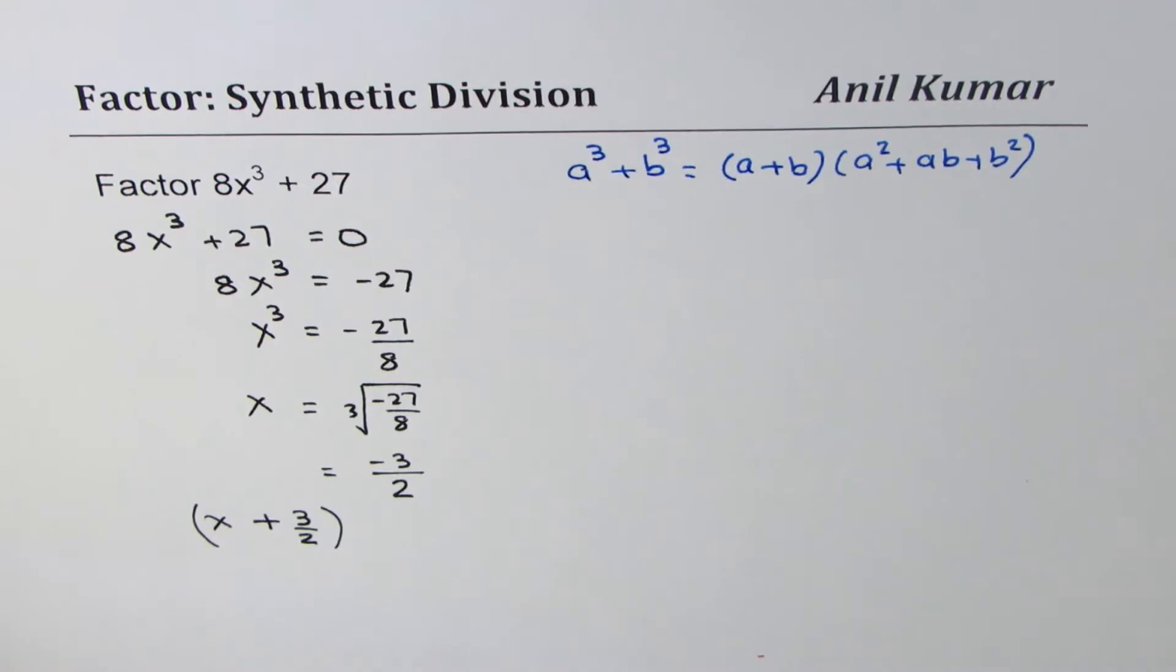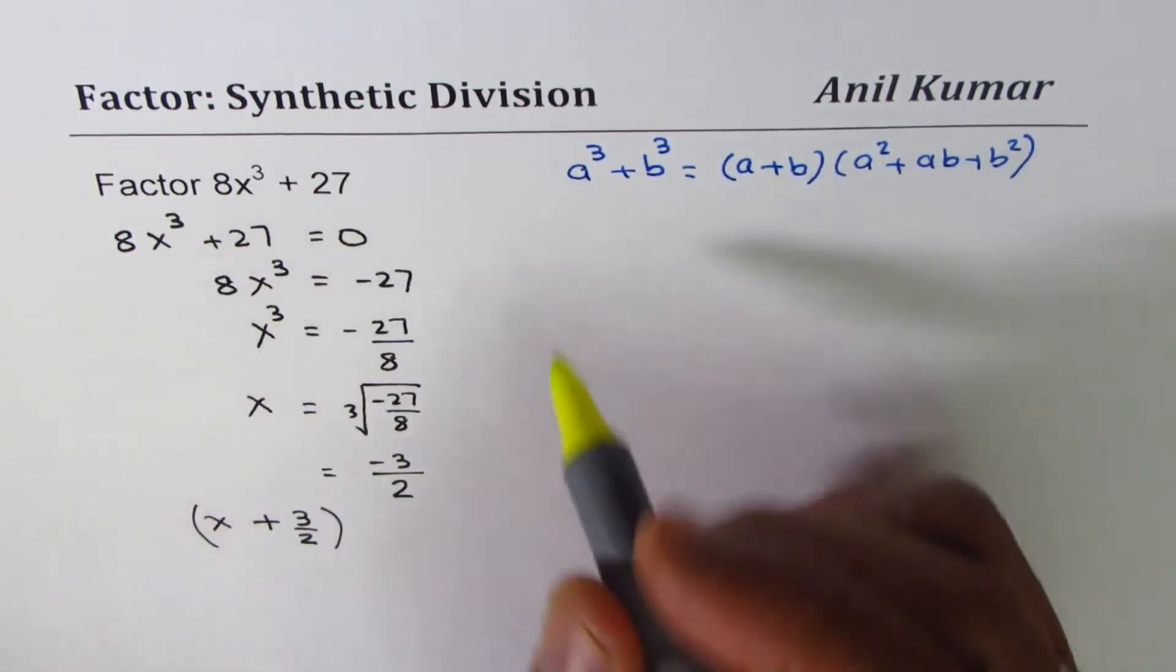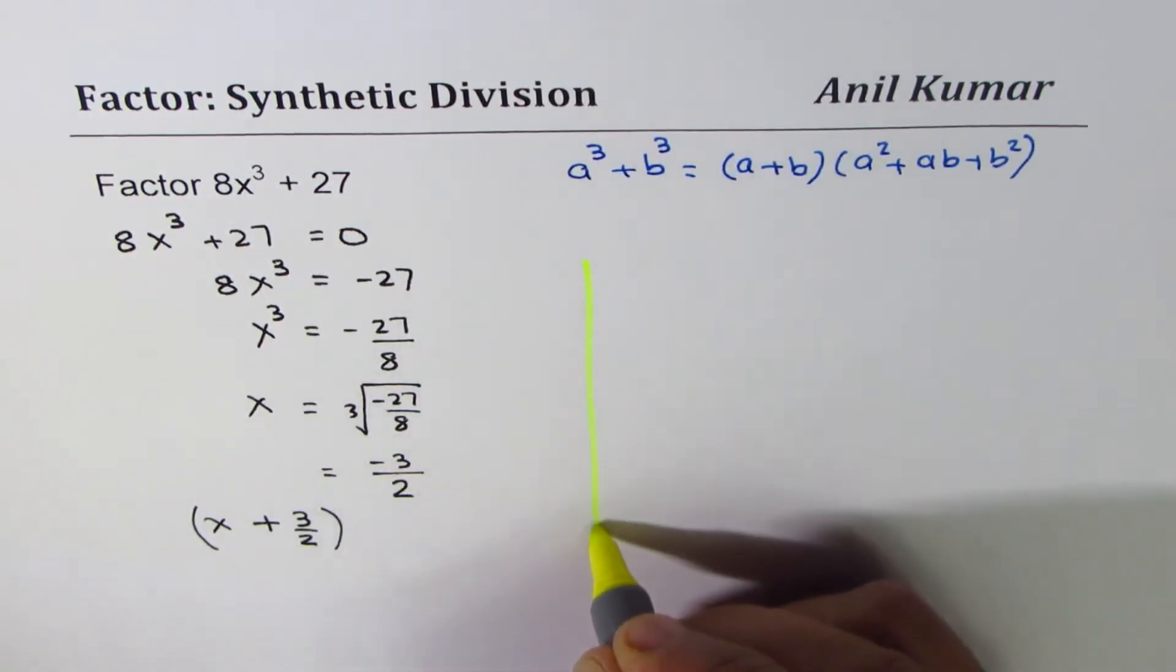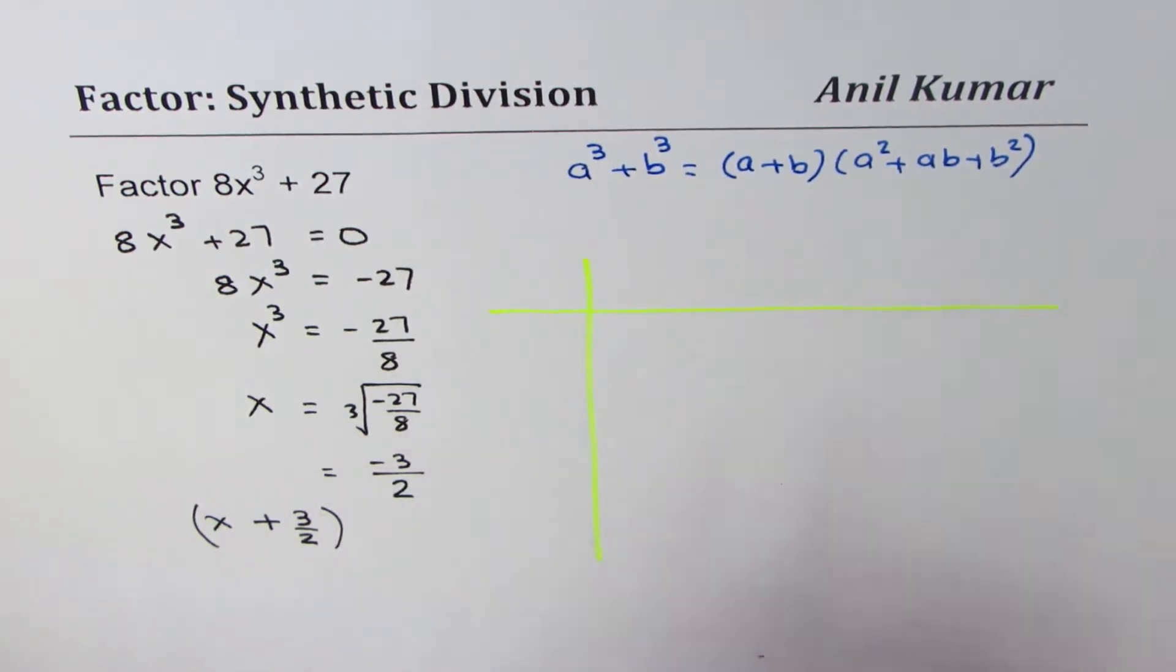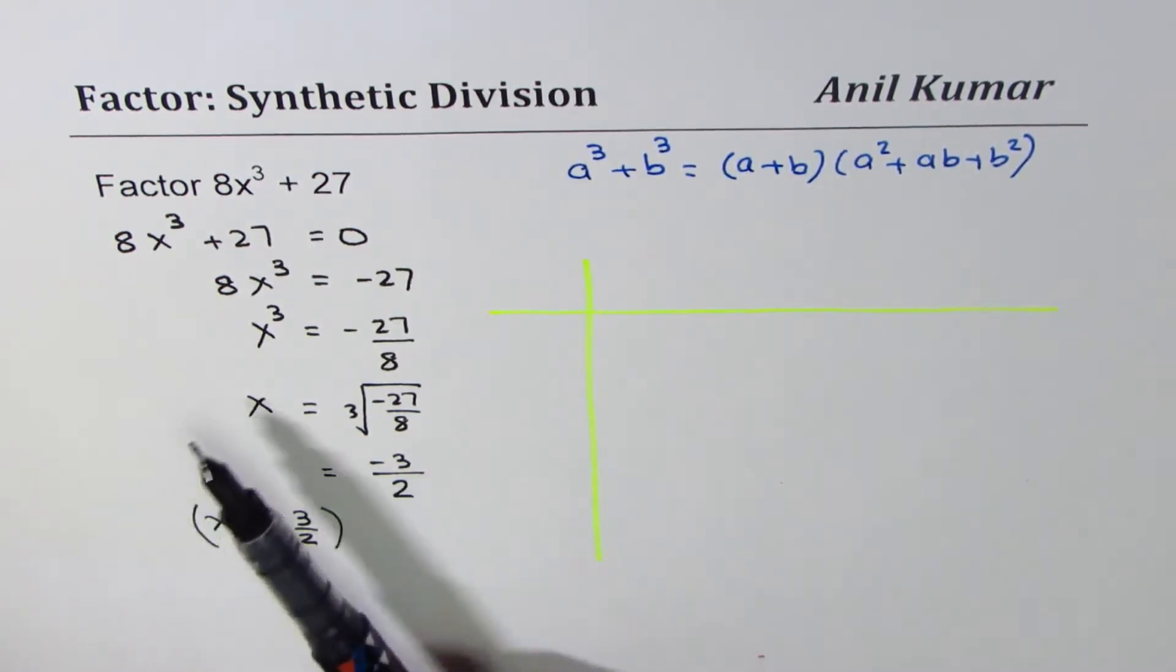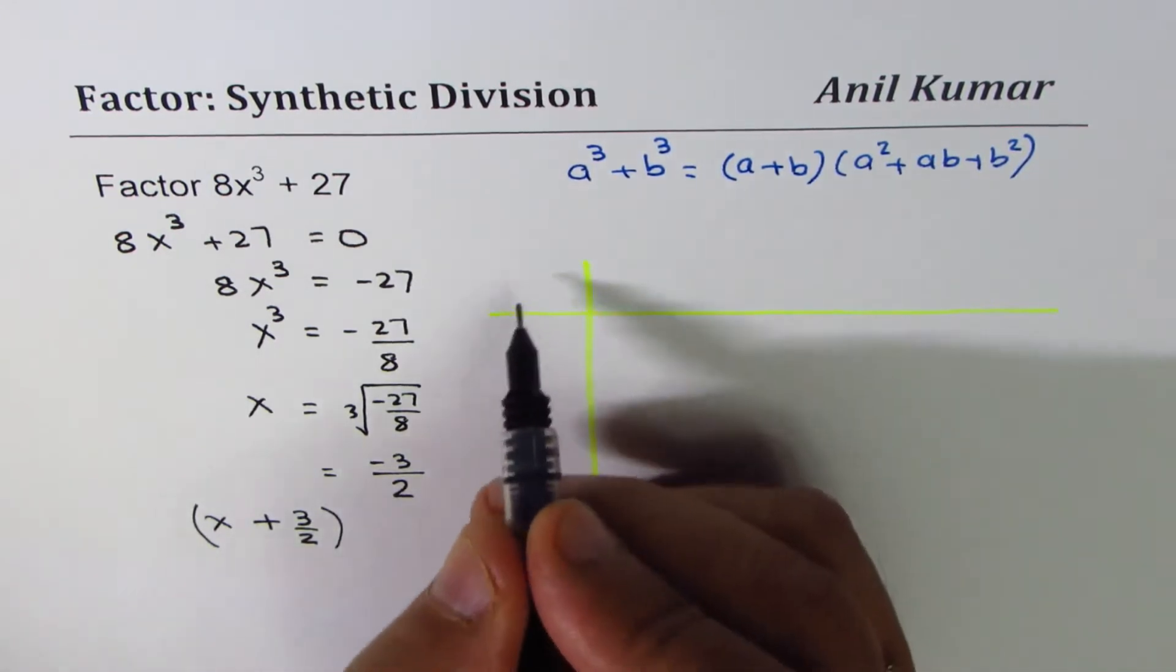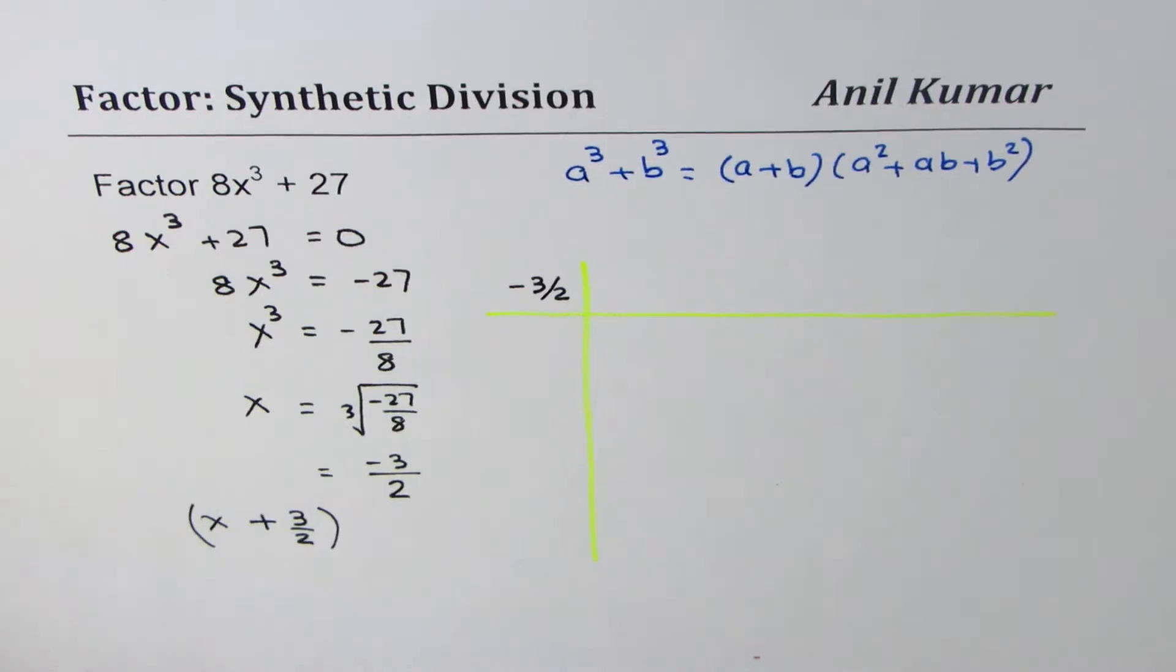Once you find the first factor, then we can divide the given terms with the factor and get the rest. Now we'll perform synthetic division to divide. What is the divisor? The x value which makes it 0. So we are expecting a remainder of 0 when we divide this by -3/2.